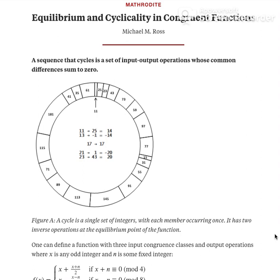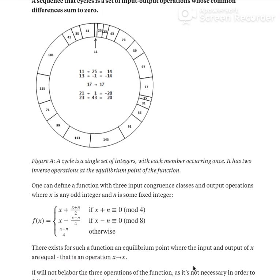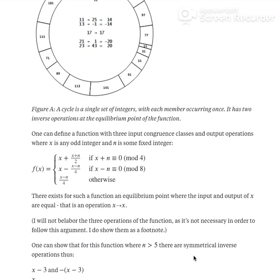It has two inverse operations at the equilibrium point of the function. One can define a function with three input congruence classes and output operations where x is any odd integer and n is some fixed integer. This could represent 3x+1 and it would work essentially the same way for the odd numbers.